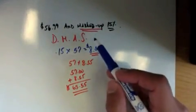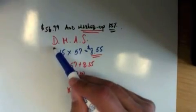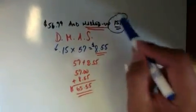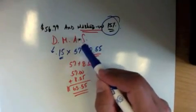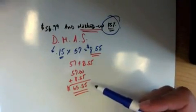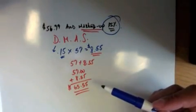So for marked up or discount, change whatever the percentage is into a decimal, like .15. Multiply, and then we're going to either add or subtract based on what they ask you. Alright guys, hope this helped. We'll see you next time.